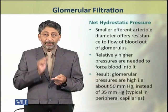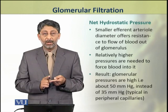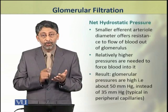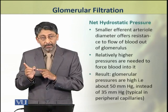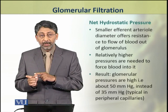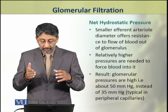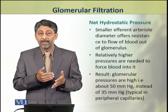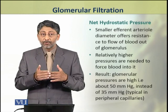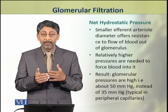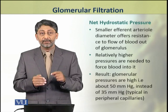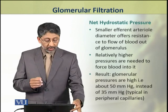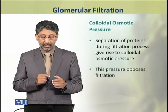The blood pressure in the glomerular capillaries is generally around 50 mm of mercury, as compared to the peripheral capillaries where blood pressure is 35 mm of mercury. This difference of 15 mm of mercury acts as the net hydrostatic pressure which favors ultra-filtration.